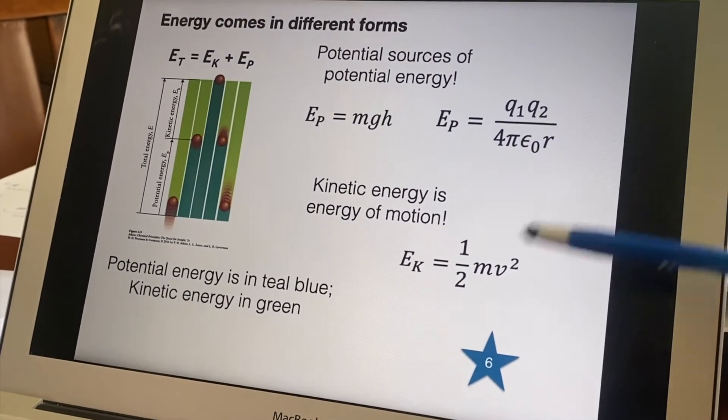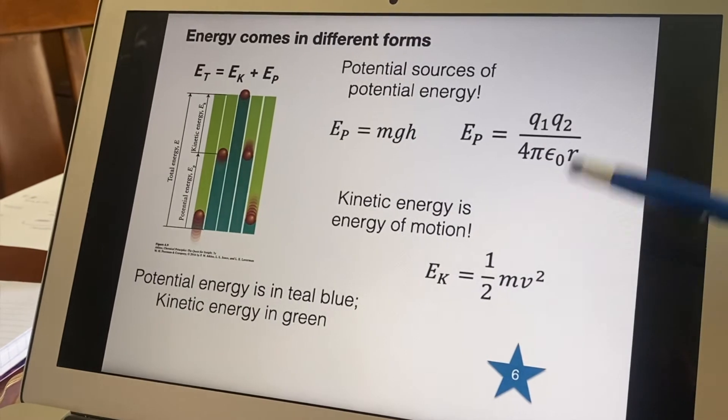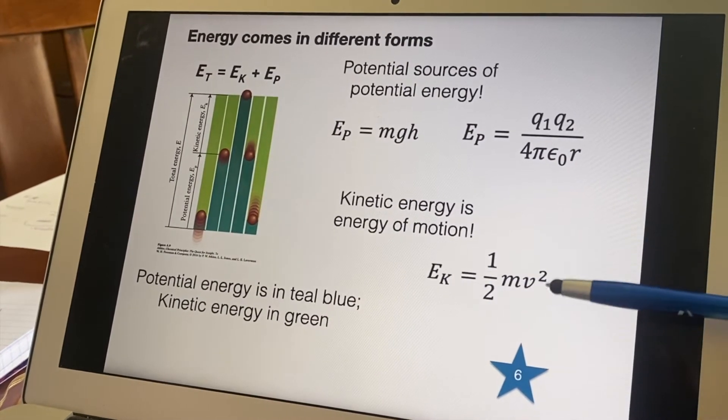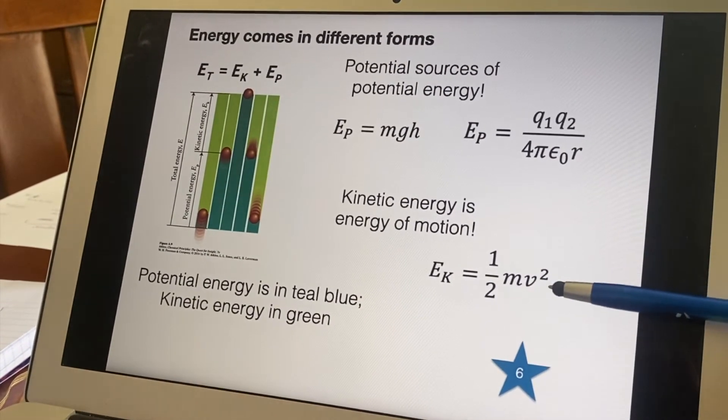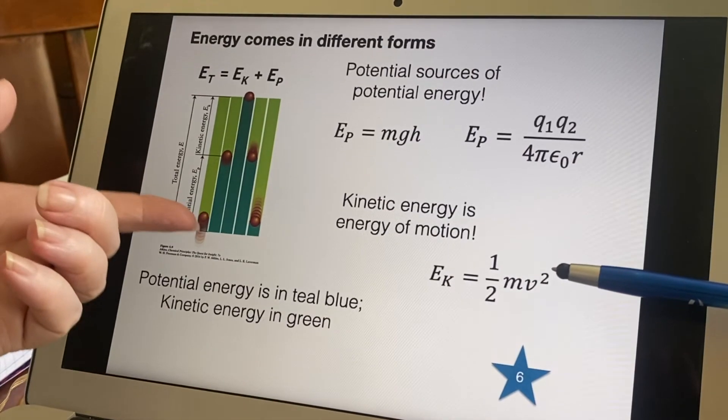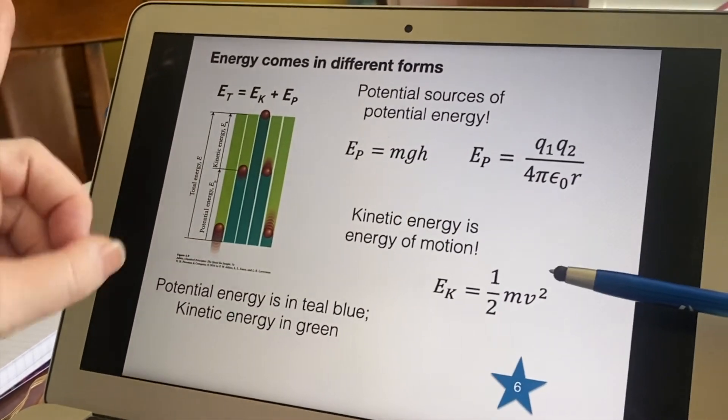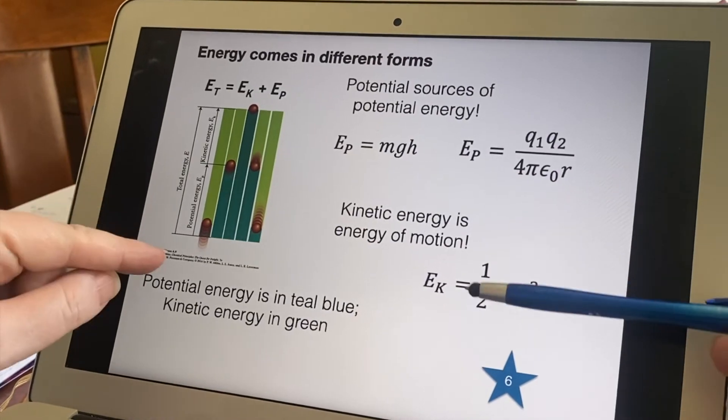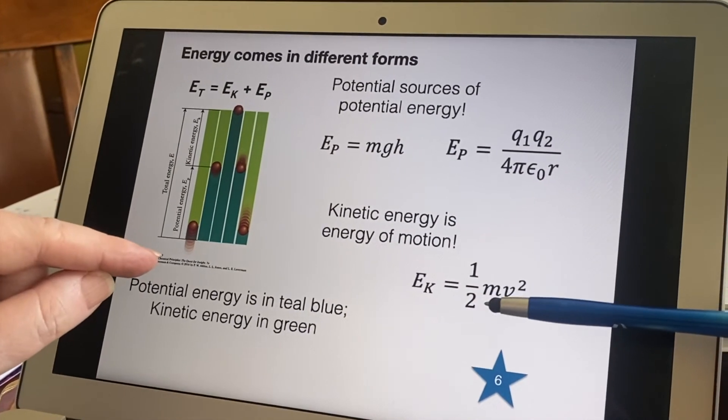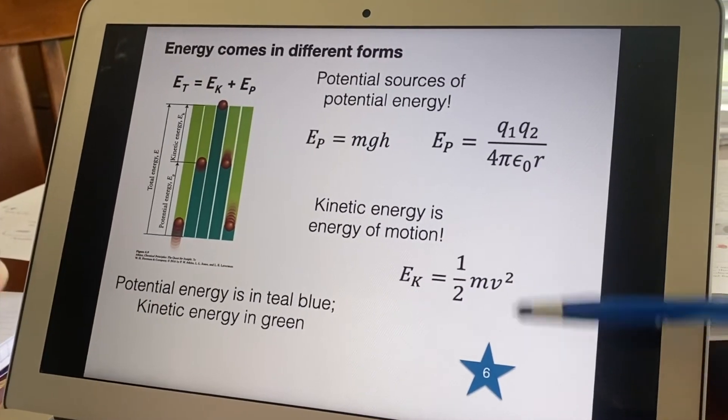Anyway, kinetic energy - the velocity, how fast is it going. Now that's what we said here, that when it was first thrown up it was going its fastest, and so that's why it had mostly kinetic energy and very little potential energy.